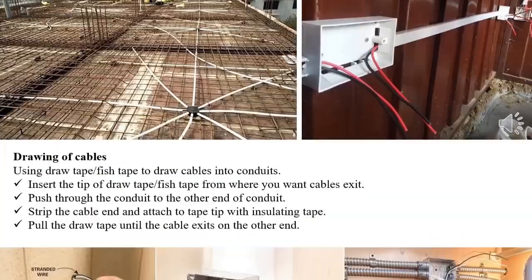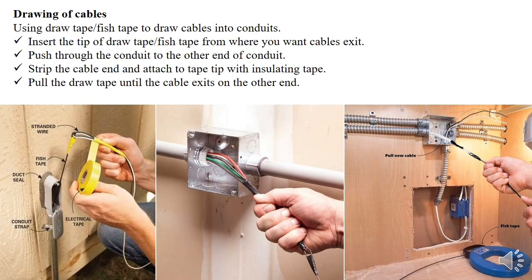Moving to drawing cables: you can see the fish tape drawn to the other end where I want the cable to go. I tie the cable end to the stripped conductor, then pull the fish tape back so the conductors travel with it through the conduit. In the second diagram you can see the conductors passing through to their destination.